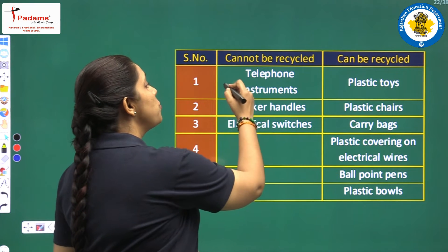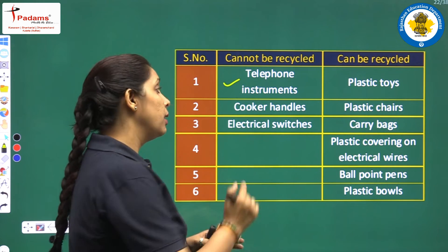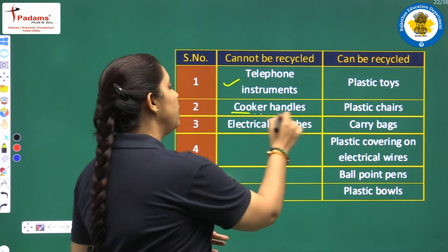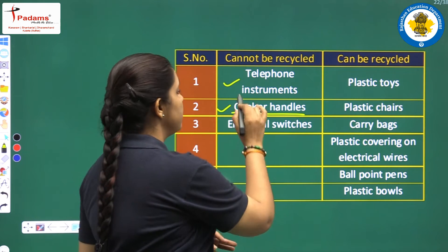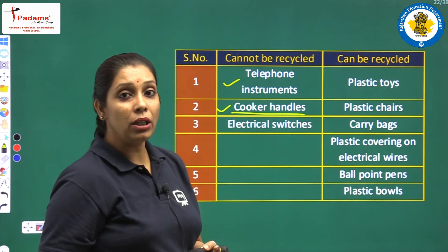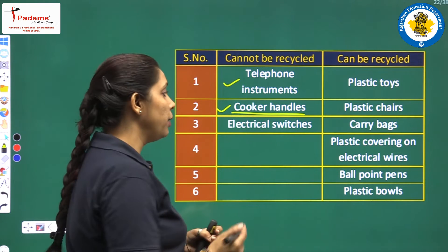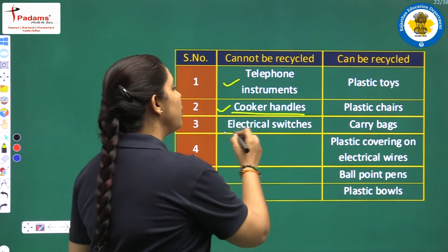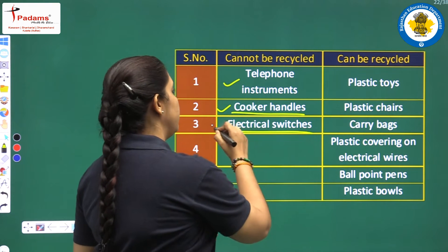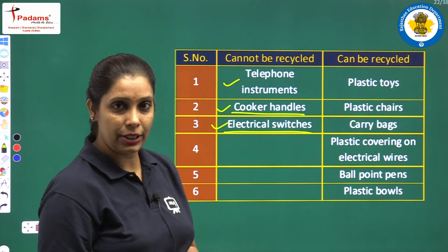Telephone instruments — we cannot recycle them. Cooker handles — cooker handles are made of bakelite, so cannot be recycled. Electrical switches — also made of bakelite, so cannot be recycled.